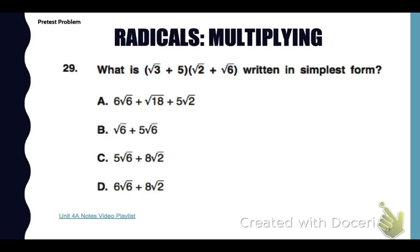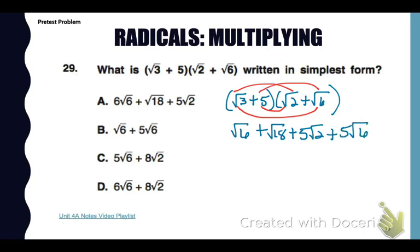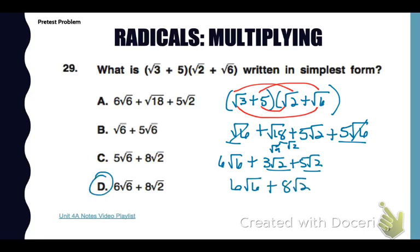Look at number 29 in your pretest packet. We need to multiply these — I'm just going to use FOIL. First terms together give me the square root of 6. Outside terms give the square root of 18. Inner terms give 5 times the square root of 2. Last terms give 5 times the square root of 6. Adding like terms: 1 square root of 6 plus 5 is 6 square roots of 6. Then I simplify the square root of 18 as 3 times the square root of 2, and add that to 5 square roots of 2. So my final answer is choice D.